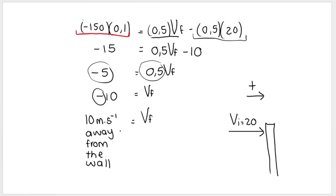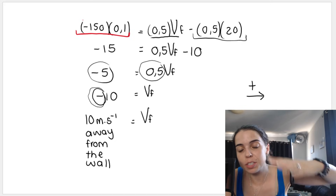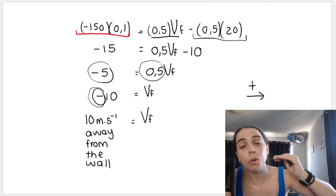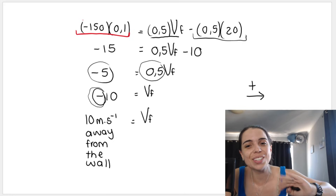Always check if the science makes sense. Towards the wall was positive; our initial velocity was positive. The wall exerts a net force on the ball to the left, causing it to change direction. The final velocity is 10 meters per second away from the wall, which is why it came out as a negative. In physics, it's always important to write your blank formula first, then substitute with unit and direction. I hope that this helped — check out the rest of the playlist for more momentum videos. Bye everyone.